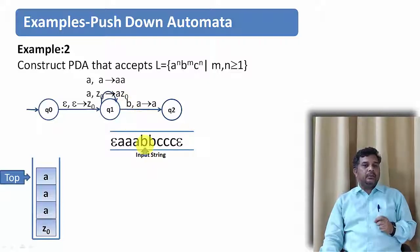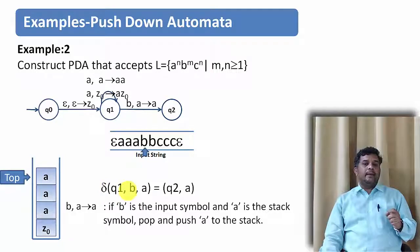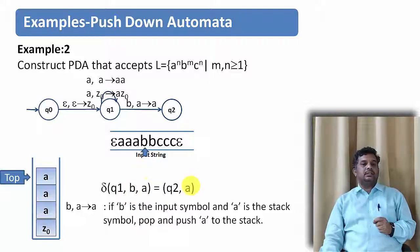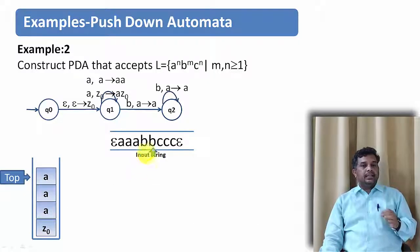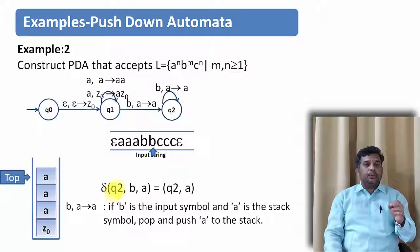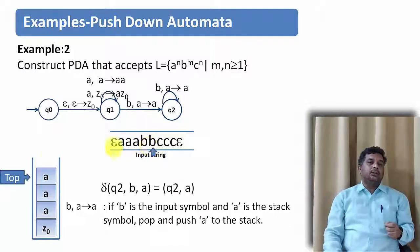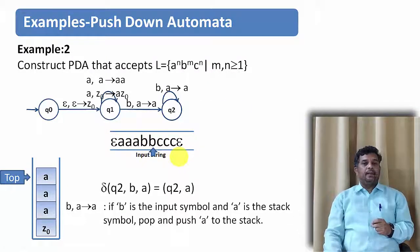When b appears as input and a is on top of the stack, we pop a and push a back — the stack data remains the same. The transition is: δ(q1, b, a) = (q2, a). For the next b with a on top, the same applies: δ(q2, b, a) = (q2, a). As we discussed, whenever b appears, no push or pop is effectively performed — the stack content is preserved.